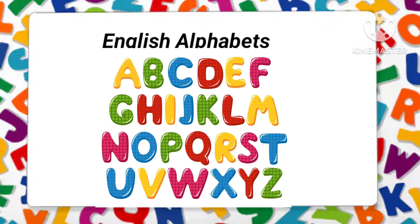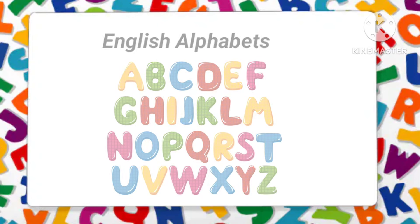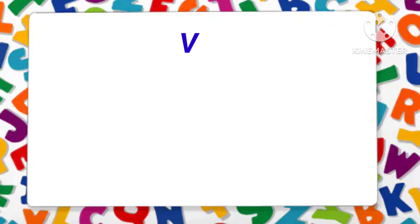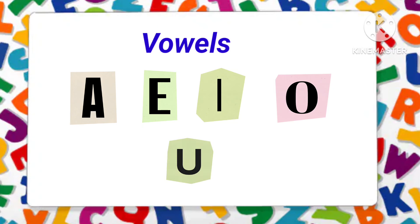There are 26 letters in English alphabets and 5 of them are vowels. There are A, E, I, O, U.